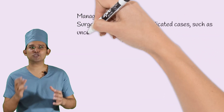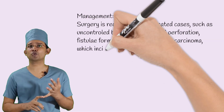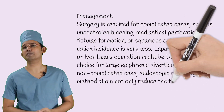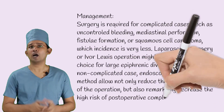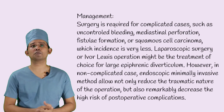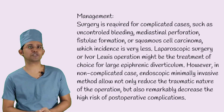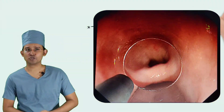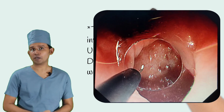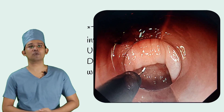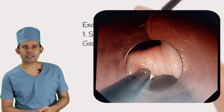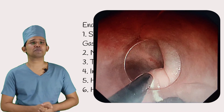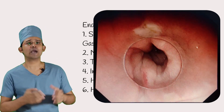Now comes the management. Surgery is required for complicated cases such as uncontrolled bleeding, perforation, fistula formation, or esophageal carcinoma. Laparoscopic surgery or Lewis operation might be the treatment of choice for large epiphrenic diverticulum. However, in non-complicated cases, minimally invasive endoscopic methods not only reduce the traumatic nature of the operation but also remarkably decrease the risk of postoperative complications. In this case, we treated by minimally invasive endoscopic approach — under proper endoscopic guidance, diverticular septotomy was done with no complications. Endoscopic devices used: therapeutic gastroscope, endo loop, endoclips, injection needle, hook knife, and hemostatic forceps.